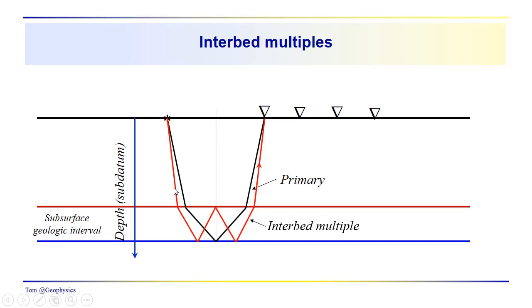So, the acoustic wavefront comes down, it bounces off the base of this layer, comes up, hits the top, is returned back down to the base, and comes back up to the geophone. So, this would be your interbed multiple.